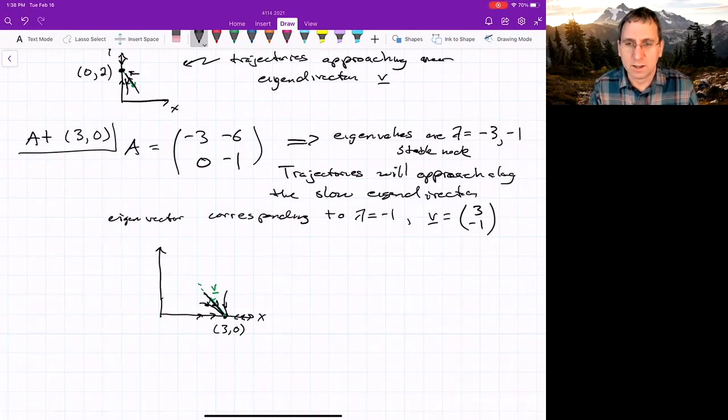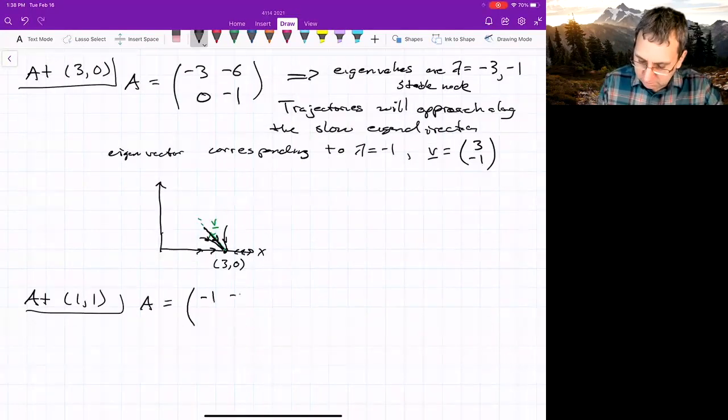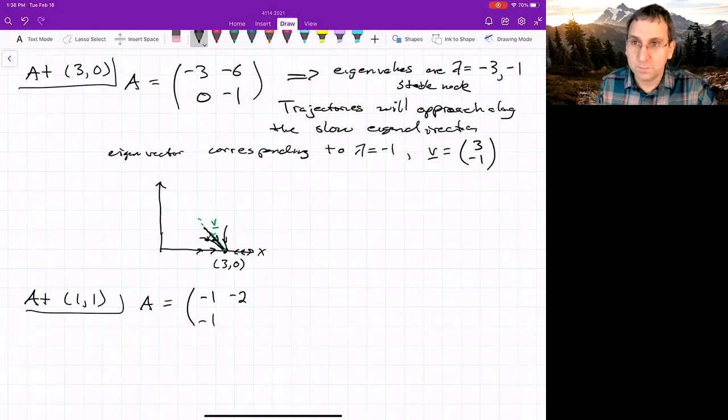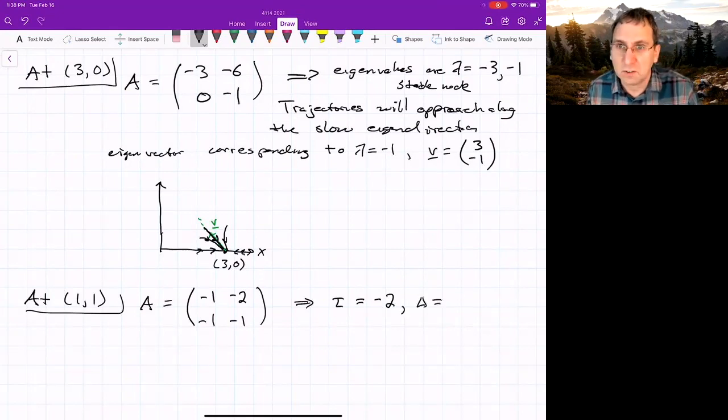We've got one more point that is (1,1). That's the interesting one because it's off of the x or y-axis. So what about at (1,1)? A equals (-1, -2, -1, -1). So here it might be useful to calculate tau. Tau is -2. And what is delta? Delta is -1. Ooh.